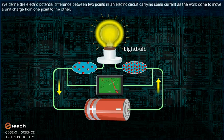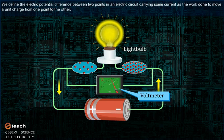We define the electric potential difference between two points in an electric circuit carrying some current as the work done to move a unit charge from one point to the other.